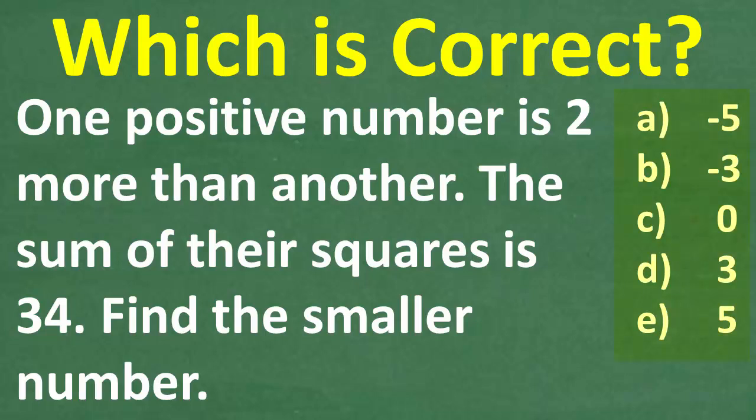So, A is negative 5. B, or choice B, is negative 3. C is 0. D is 3. And E is 5.